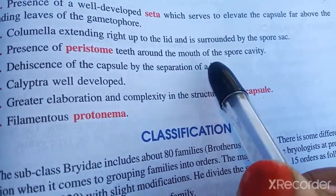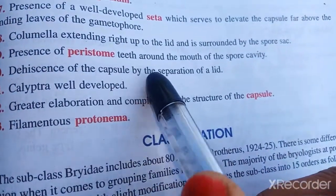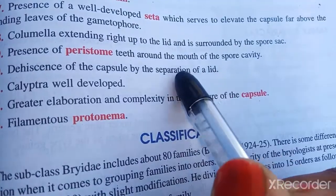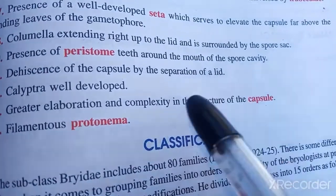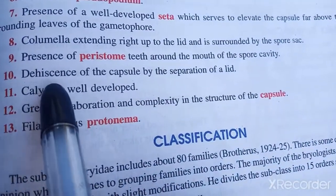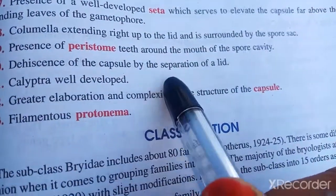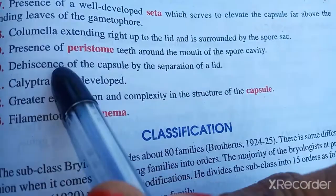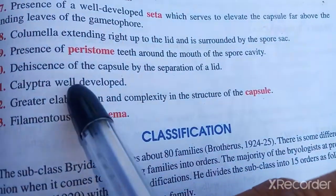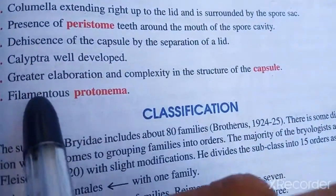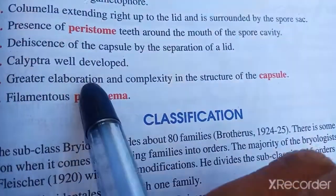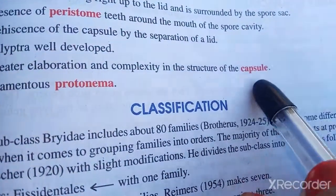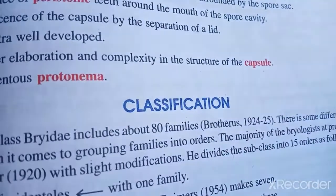The calyptra is well developed and serves as a protective layer for the developing embryo. There is further greater elevation and complexity in the structure of the capsule.